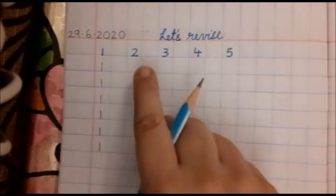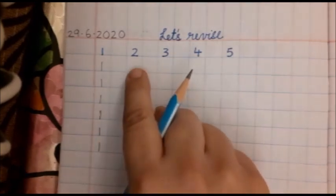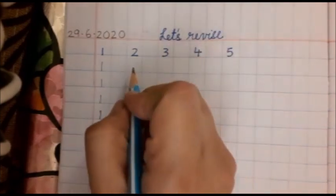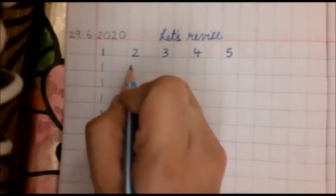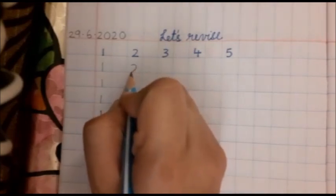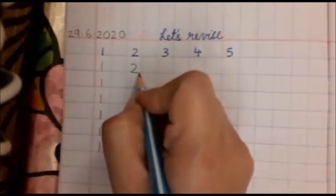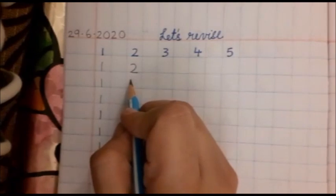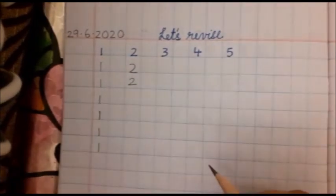Now I will go on to the next number. Which is the next number? Number 2. Now make sure bachcha when you are writing, you touch the line. You touch this line at the bottom. Do not write your number like this. No.